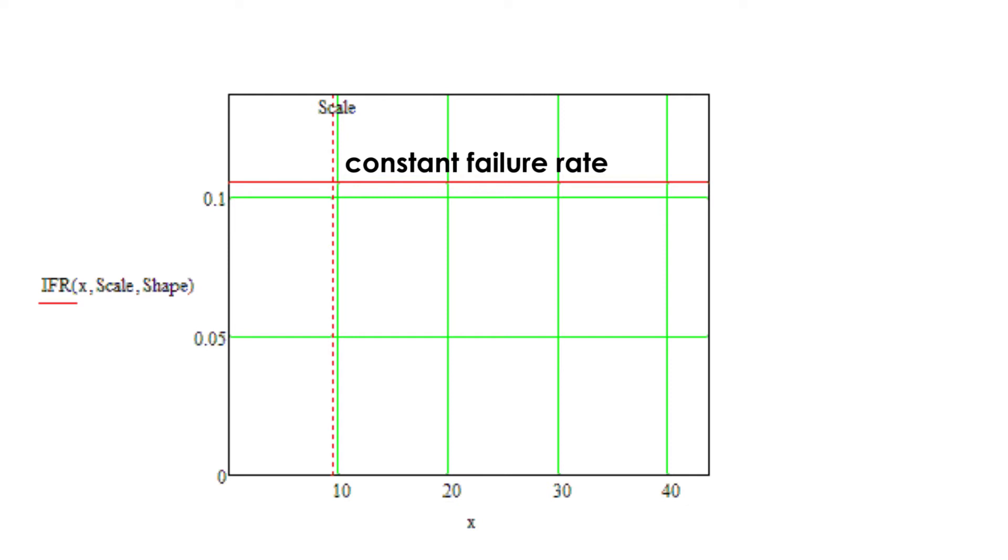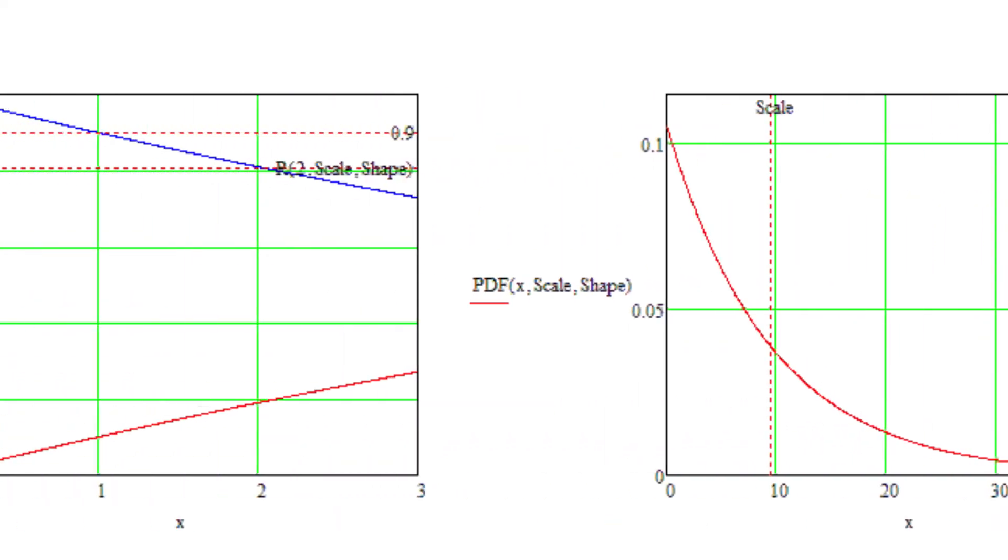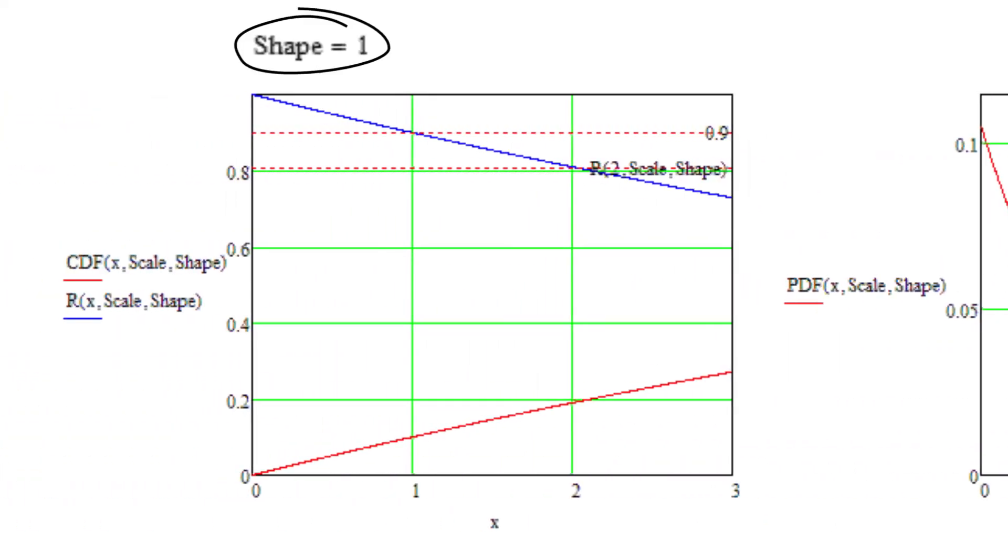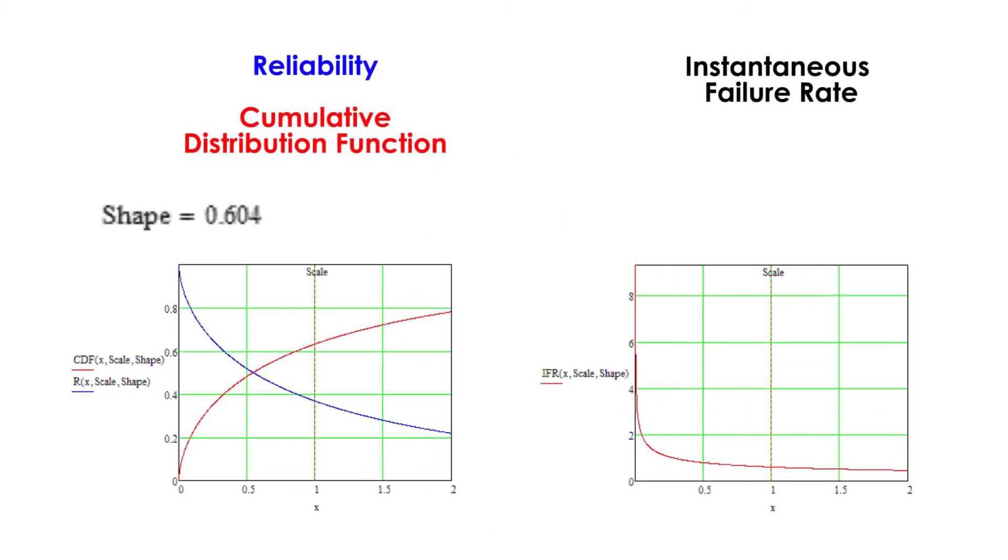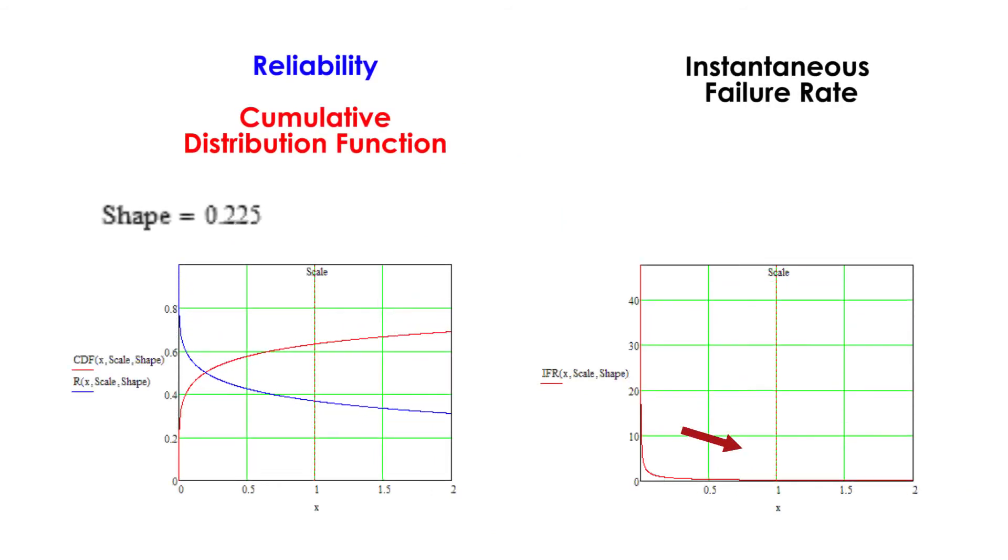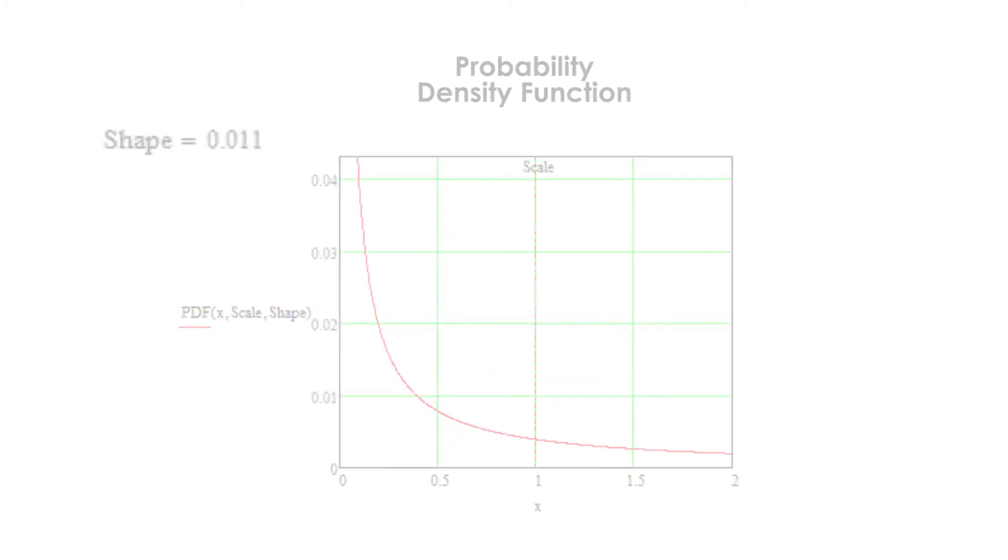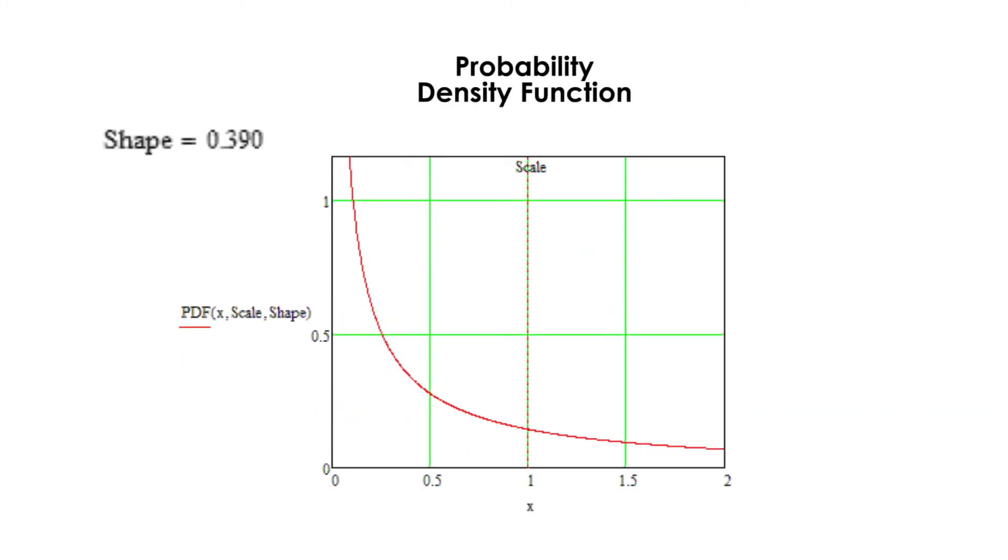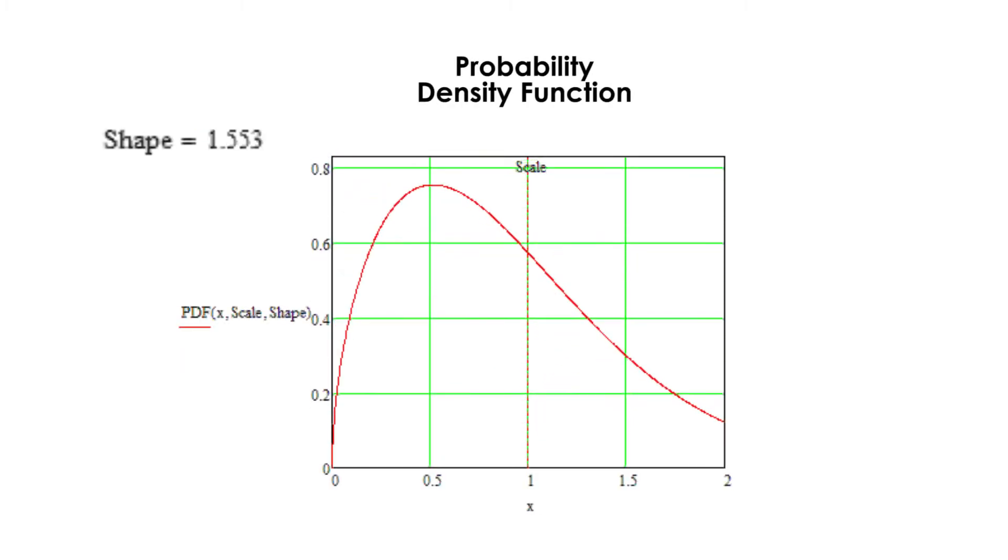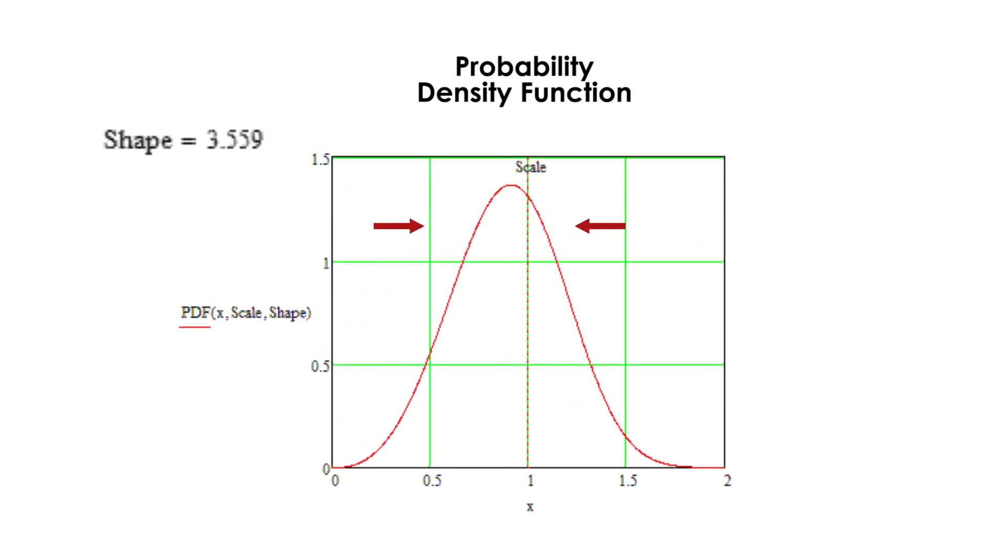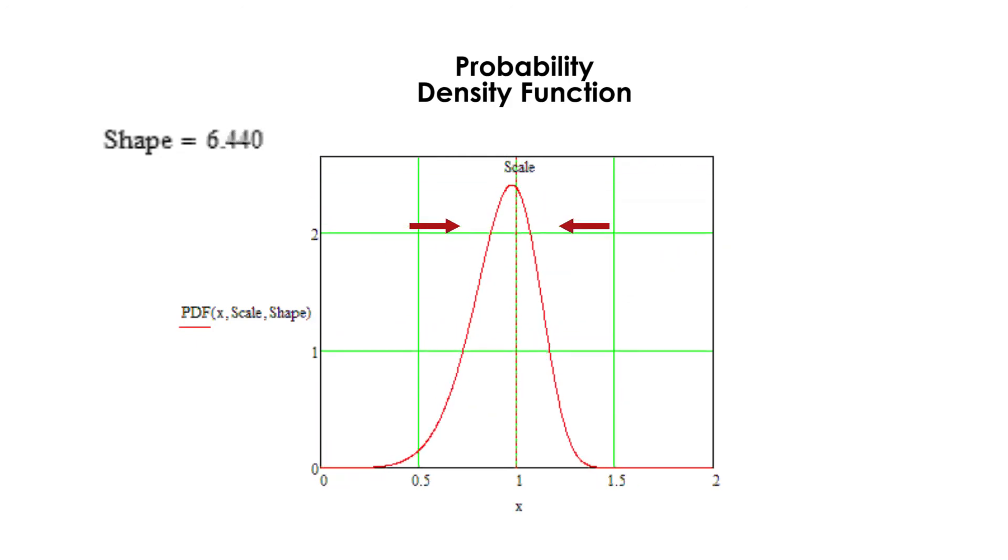The Weibull distribution models the constant failure rate when the shape equals 1. When the shape is less than 1, the failure rate decreases, and when the shape is more than 1, the failure rate increases. The higher is the shape, the more compressed is the time span in which most components fail, which is mostly beneficial.